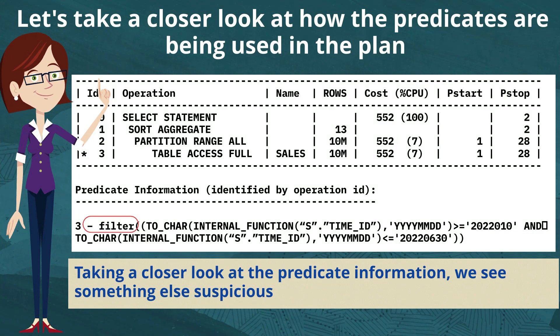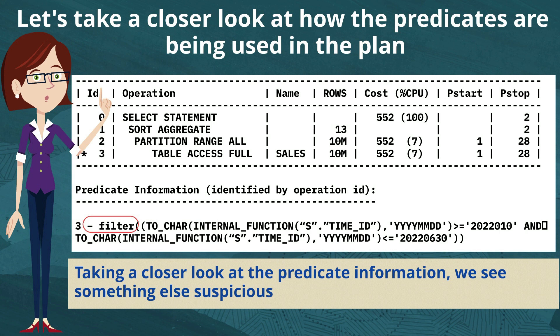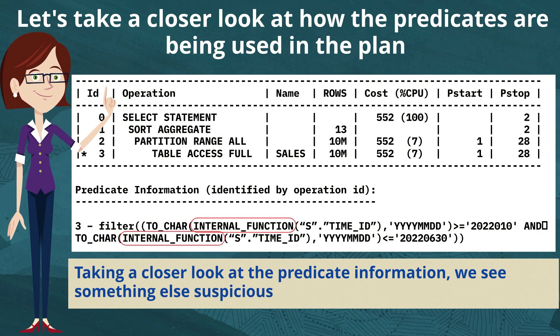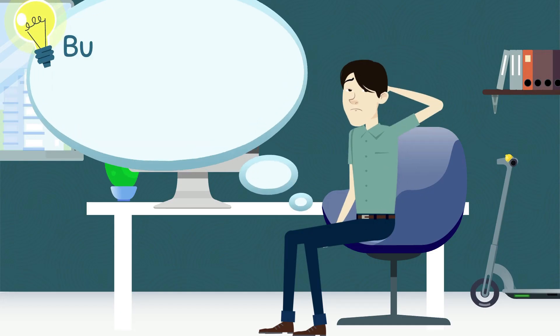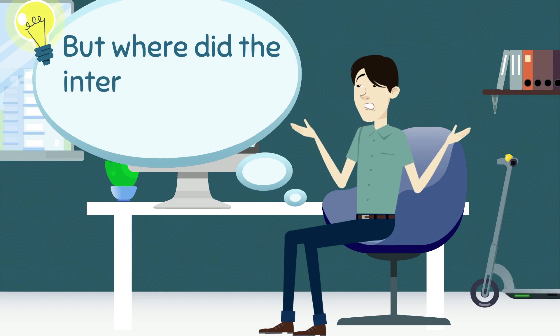So the first clue we have is that our where clause predicate is being used as a filter predicate and not as an access predicate. But if we take a closer look at that predicate information, we're going to see that we also see something else that's suspicious. We see that somebody's inserted an internal function call to our where clause predicates. So where did that internal function call come from?